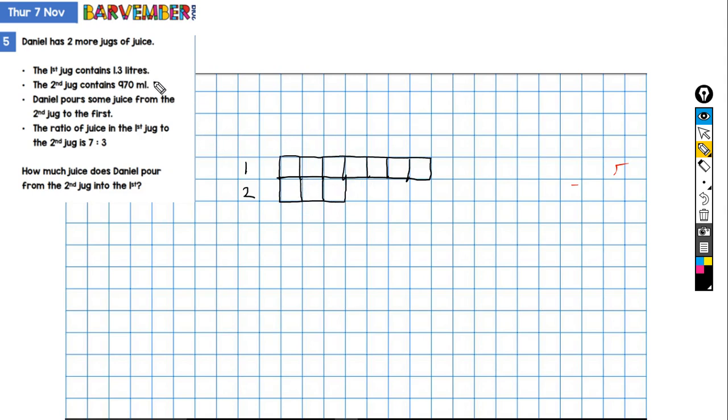Okay, so this is the information that we're given in the second part. The other thing to note is that no juice is lost. It's simply poured from one jug to the other. So we do know what the total amount of juice is. We know how much juice is contained in this ratio. And that's, we've got 1.3 litres plus 970.